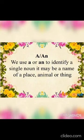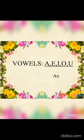Now let's see where we can use 'a' and 'an'. We use 'a' or 'an' to identify a single noun. It may be a name of a place, animal, or thing. Now we all know that there are 26 letters in our English alphabet.